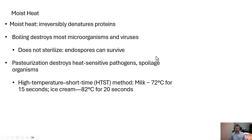We can kill a lot of pathogens with moist heat, especially the heat-sensitive pathogens. Endospores, unfortunately, can survive. Remember that endospore formation is often triggered by environmental change of the extreme kind. So if you increase the temperature, you will entice certain bacteria species to form endospores — that's their way of surviving environments that are not suitable. Unfortunately for this method, a lot of endospores can survive.